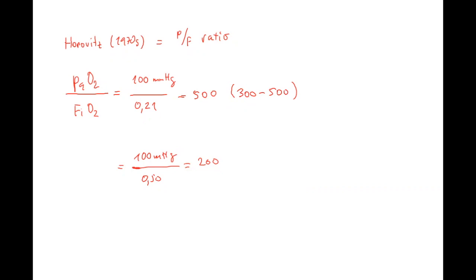If this patient who has 100 millimeters of mercury but gets 50 percent of oxygen, so the Horowitz is 200, you can sort of get the idea - you can multiply, you did backwards, you multiply by 0.21, and how much is that? It's like 42.